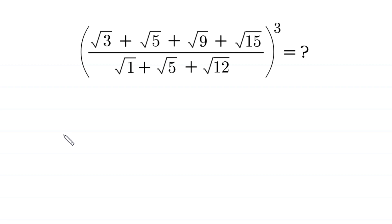Hello everyone, you are welcome. Today we evaluate the radical expression: the cube of (√3 + √5 + √9 + √15) divided by (√1 + √5 + √12). Let's start.